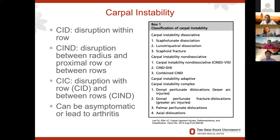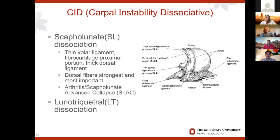Carpal instability can be asymptomatic for patients, or it can lead to arthritis and everything in between. When looking at dissociative carpal instability, think of the scapholunate ligament. You have a thin volar ligament and a thick dorsal ligament — that's the strongest and has the most important fibers. When you get dissociation of this, you can get scapholunate advanced collapse, which could potentially lead to arthritis. Likewise, you can also have lunotriquetral dissociation.